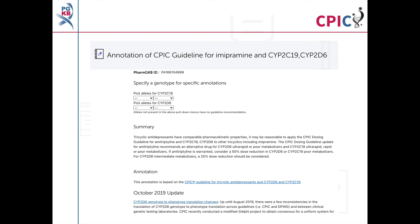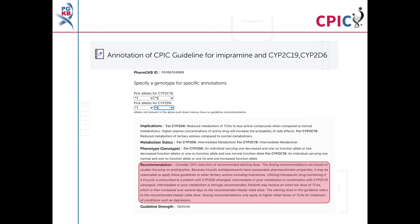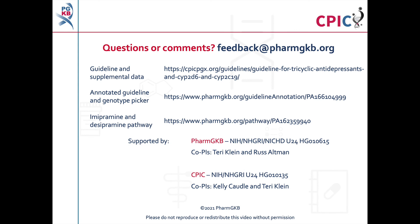This guideline has been annotated on the PharmGKB website, including a drop-down menu where an activity summary can be given for specific combinations of alleles. The activity summary includes implications for the patient's response to imipramine, the appropriate dosing recommendation for the specific genotype, and the strength of that recommendation. Remember that variation in other genes, as well as demographic and clinical factors including concomitant medications, can affect treatment. It remains the responsibility of the clinician to determine the best course of treatment. CPIC and PharmGKB assume no responsibility for any injury or damage arising out of any use of CPIC's guideline or for any errors or omissions. The guideline and supplementary information are freely available at the PharmGKB and CPIC websites using the links in the description below this video.